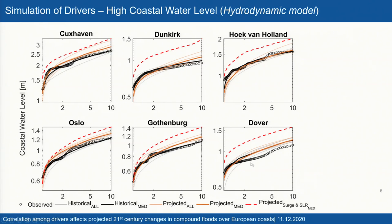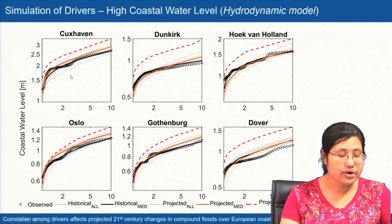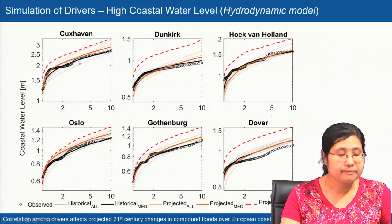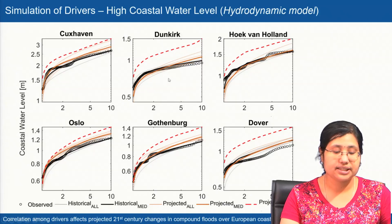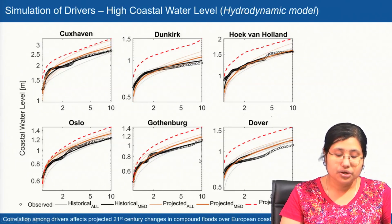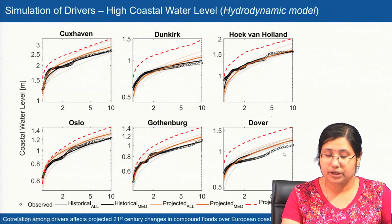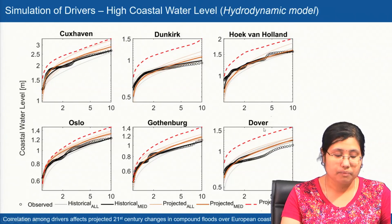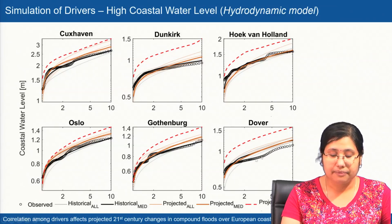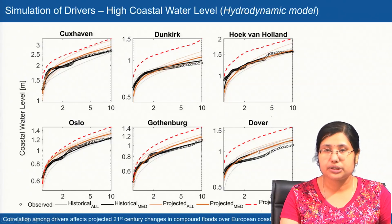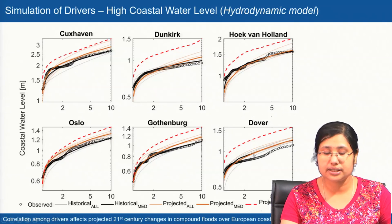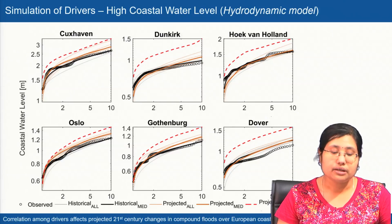In the simulation of drivers, the grey line shows the historical model simulation — the RCM-forced DELFT3D model — and the dots show the empirical distribution of the observed surge, while the brown line shows the projected surge scenario. The historical simulation and empirical observation show close correspondence, particularly in regions with complex topography such as the Dover Strait. In the projection time window, we find a marginal increase in surge; however, when we combine surge with the projected sea level rise, we see a substantial increase in hazard. This is the univariate hazard estimation of the projected surge.